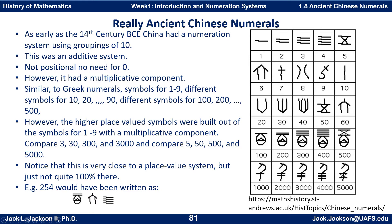I'm pulling this information from the MacTutor History of Mathematics site — there's a URL there, and this chart comes from there. So it's pretty close to a place value system, but just not quite. It's not really positional, but it does have some of those features.